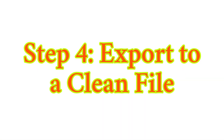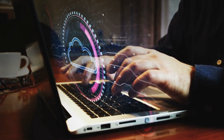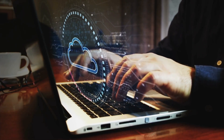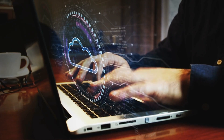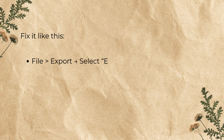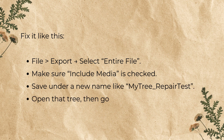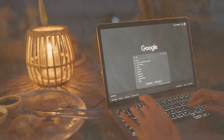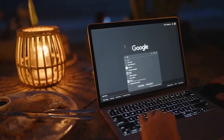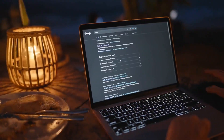Step 4: Export to a clean file. Sometimes the original file is too damaged to fix directly. Go to File > Export > Select Entire File. Make sure 'Include Media' is checked. Save under a new name like 'My Tree Repair Test.' Open that tree, then go to File > Upload and Link to Ancestry. This gives you a fresh sync relationship, often solving deep file corruption issues.